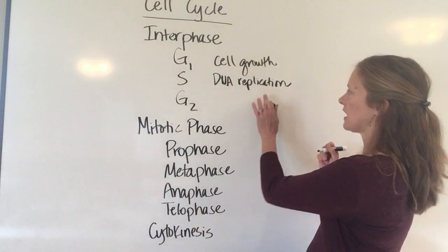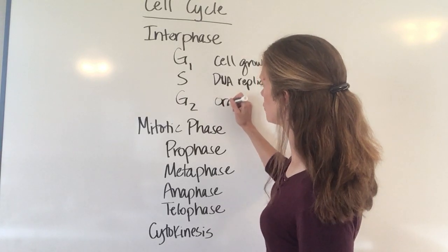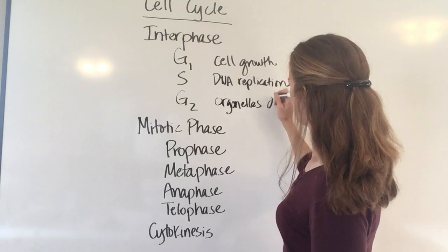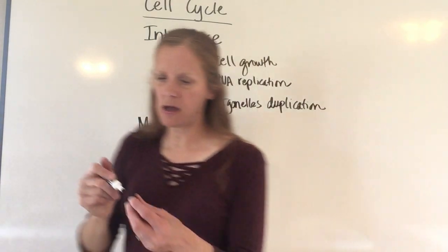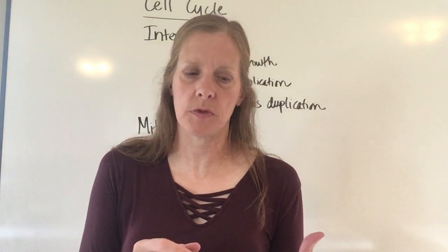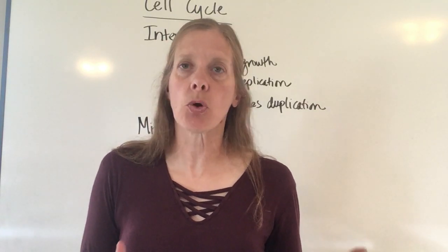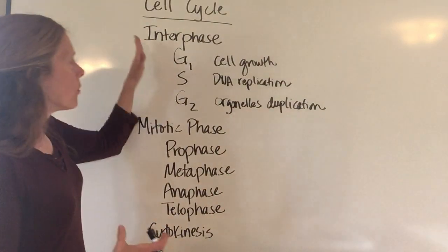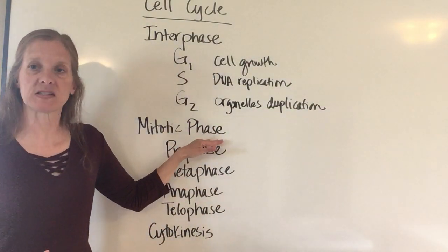That's DNA replication. G2 is when the organelles also have to duplicate. Every cell is going to have to have Golgi bodies, endoplasmic reticulum, vacuoles, and all that sort of stuff in order to survive. So the organelles also are going to have to be duplicated before the cell is actually going to divide.